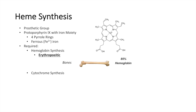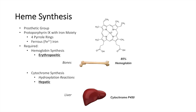Another requirement for heme is cytochrome synthesis. You may have heard of the cytochrome P450 system within the liver — that is the major detoxification pathway in the liver. Cytochromes are critically important in that detoxification system, particularly in hydroxylation reactions to detoxify drugs and compounds. When heme is produced for cytochrome synthesis, we call that the hepatic system, and this hepatic production of heme is critically important for the cytochrome P450 system within the liver.